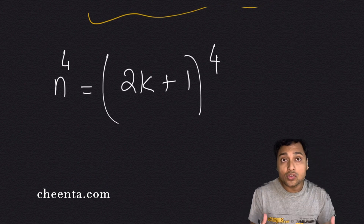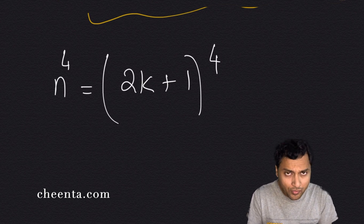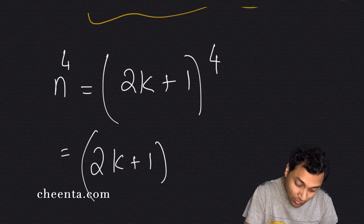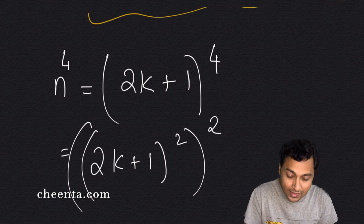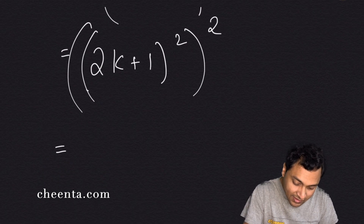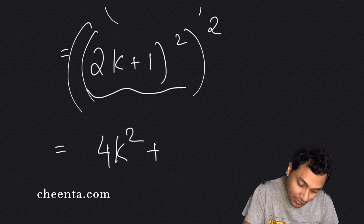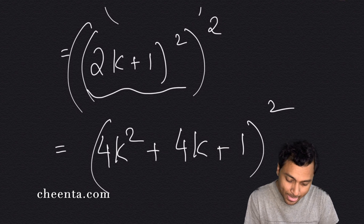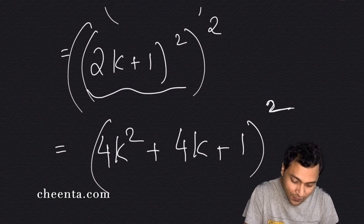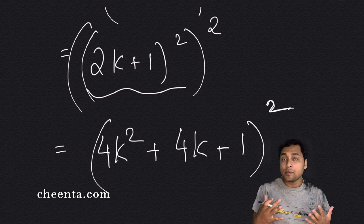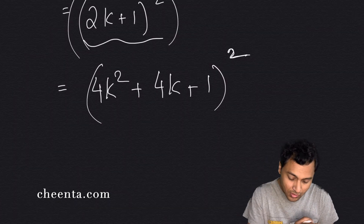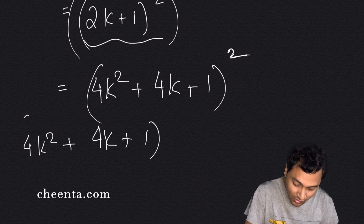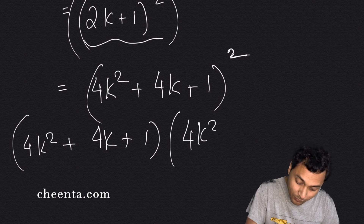Since n is odd, we can write n as 2k + 1. Any odd integer can be written in the form 2k + 1. We raise this to the fourth power by first squaring: (2k + 1)^2 = 4k^2 + 4k + 1, and then squaring again. We multiply 4k^2 + 4k + 1 by itself.